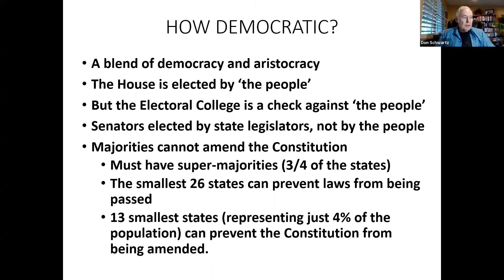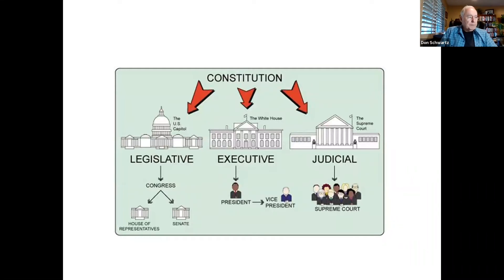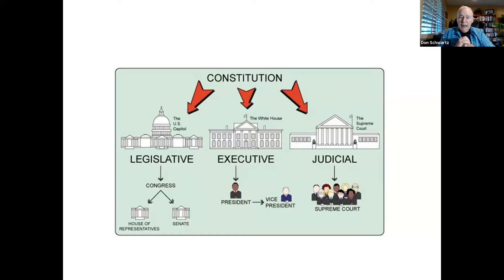James Madison, in particular, knew a lot about human nature. He said, ambition must be made to counteract ambition. As a result, the Constitution established a system of separation of powers among the three branches of government. The power to enact laws was given to a two-house legislature made up of a Senate and a House of Representatives. The power to enforce law was given to the executive branch, and the power to interpret law given to the judicial branch.